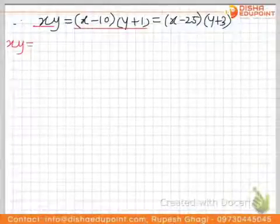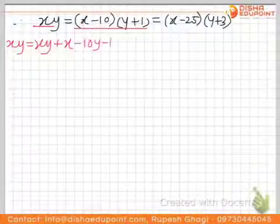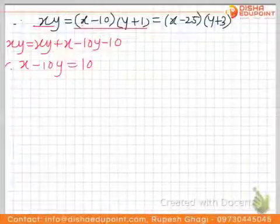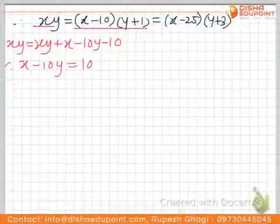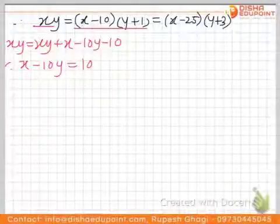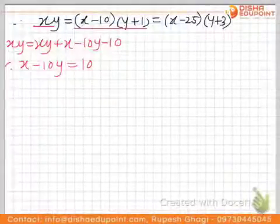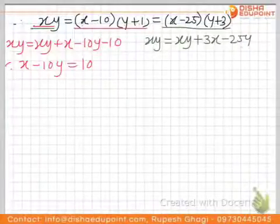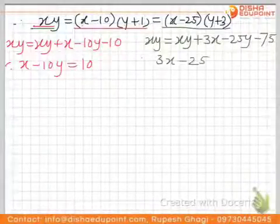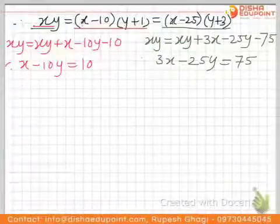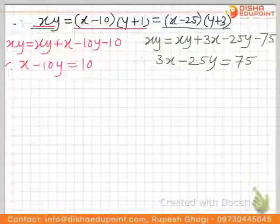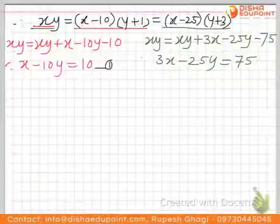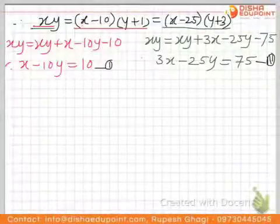Equating the first two expressions, x·y = x·y + x − 10y − 10, which simplifies to the first linear equation: x − 10y = 10. Similarly, equating the first and last expressions gives the second linear equation: 3x − 25y = 75. We now have two linear equations in two variables x and y. Let's call them equation 1 and equation 2.